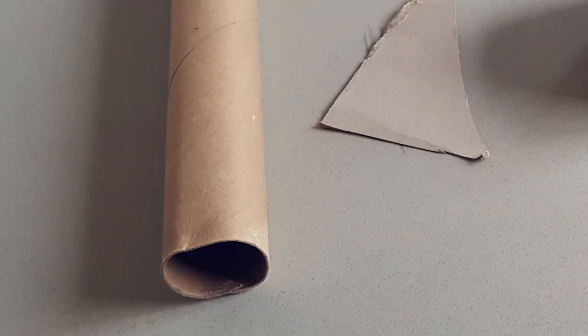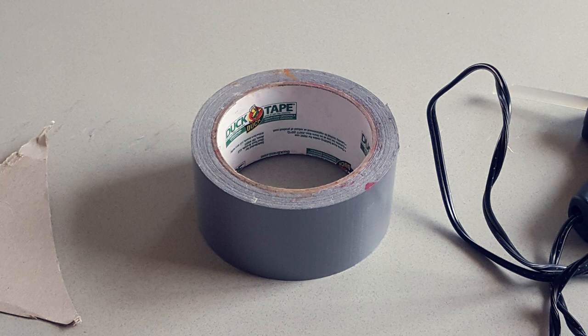All you need is the tube from a paper towel roll, some cardboard for wings, some tape, and maybe some hot glue.